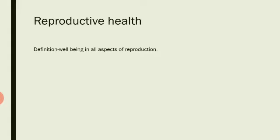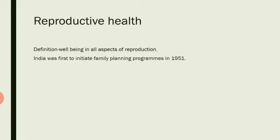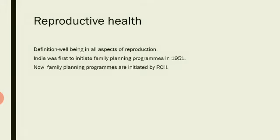India was the first country to initiate programs and action plans related to family planning in 1951. Initially these programs were called family planning programs, but currently the same programs are carried out by RCH — that is, Reproductive and Child Health Care programs.